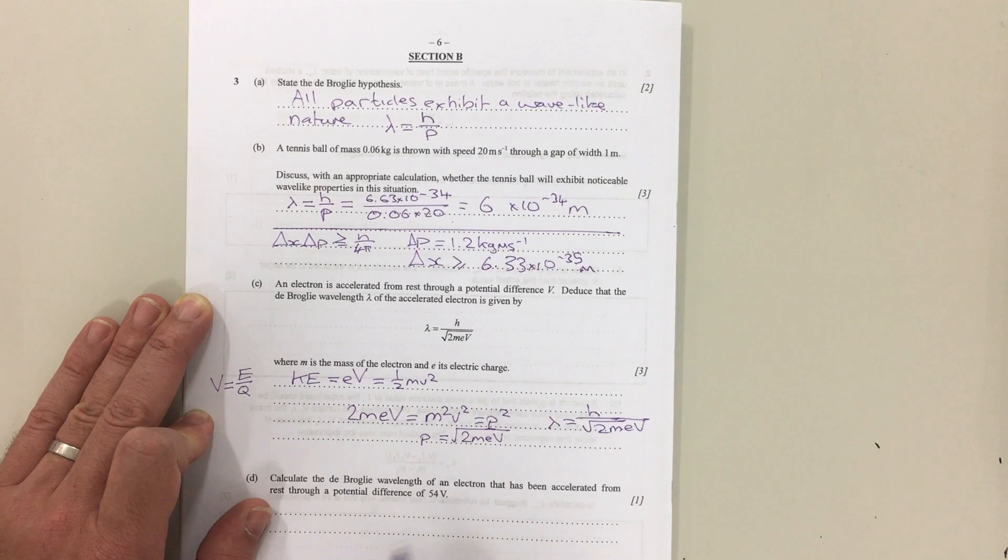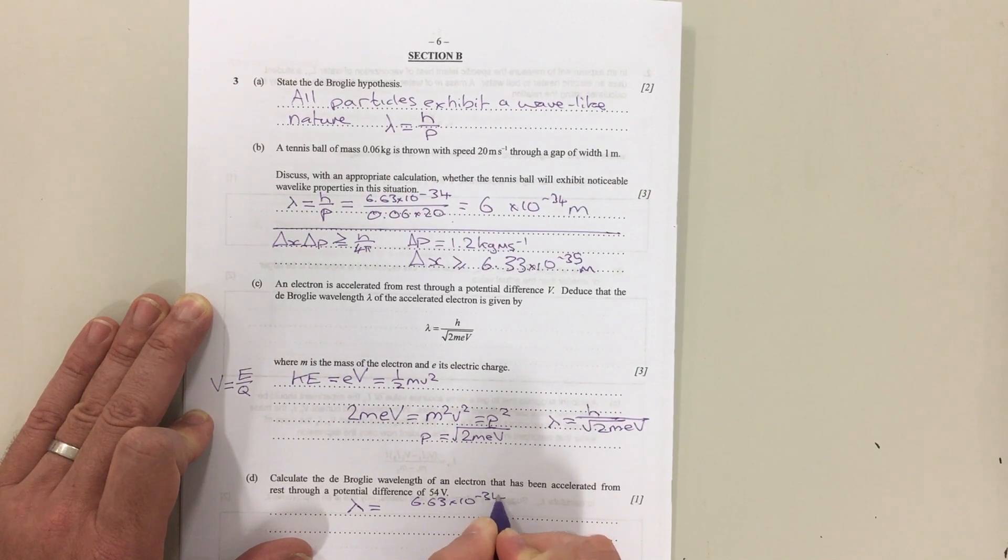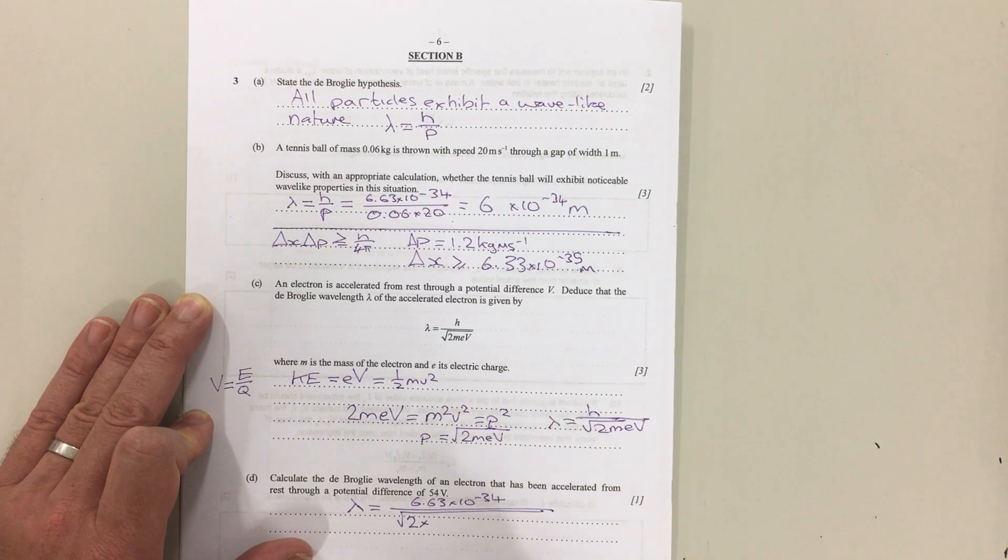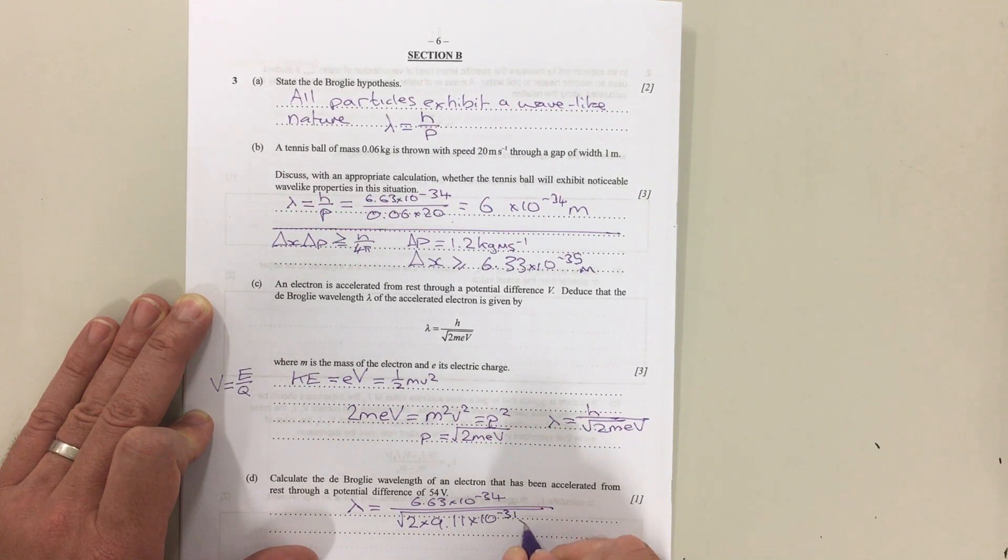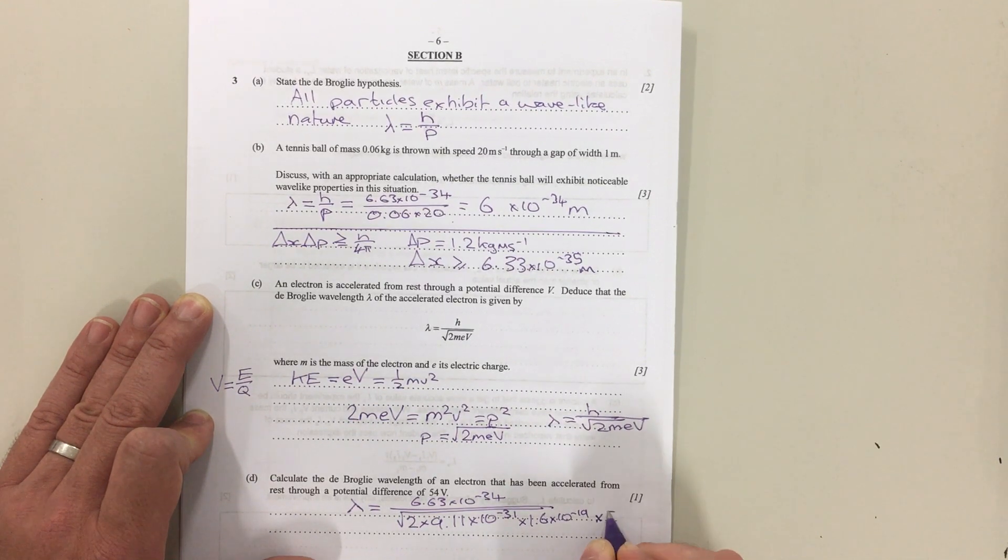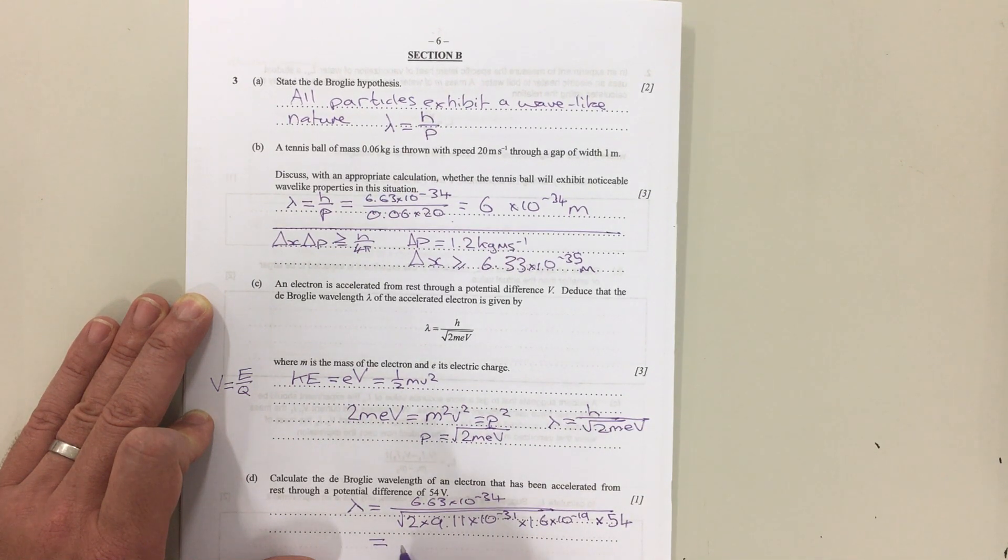The final part is just using this equation to calculate the de Broglie wavelength. That gives us λ = 6.63 × 10⁻³⁴ over the square root of 2 times the mass of an electron, which is 9.11 × 10⁻³¹, times the charge on the electron, which is 1.6 × 10⁻¹⁹, times the voltage which is 54 from the question. That gives you a de Broglie wavelength of 1.7 × 10⁻¹⁰ meters.